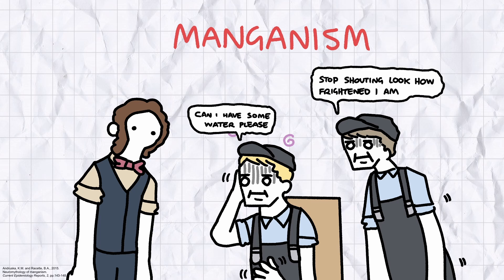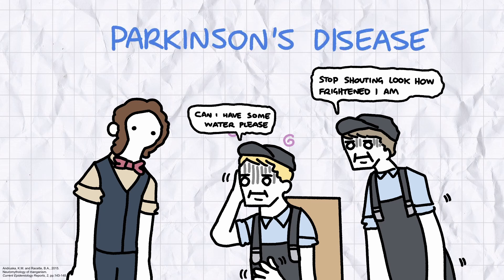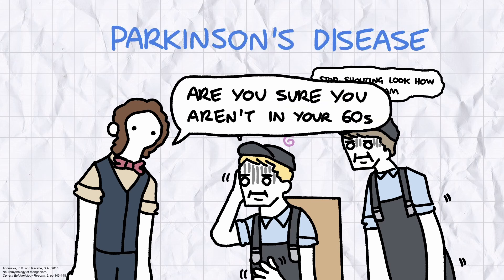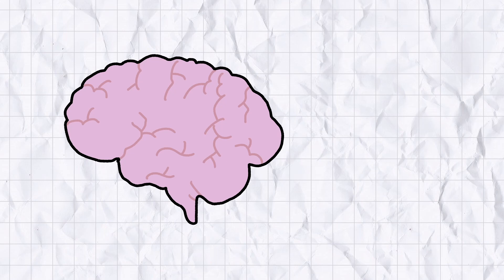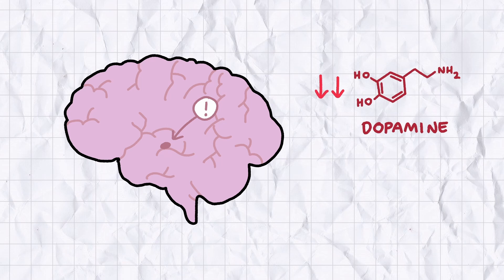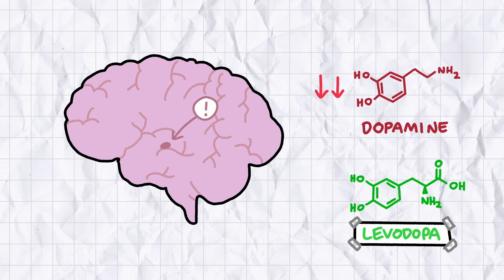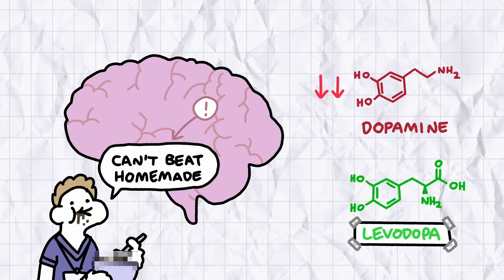Now, medics in the audience may have spotted this condition bears an eerie resemblance to Parkinson's disease, a condition manganism sufferers have historically been misdiagnosed with. Parkinson's disease is most common in the elderly, and is caused by the degeneration of nerve cells in the brain, affecting the production of dopamine. While there isn't a cure for Parkinson's disease, the dopamine deficiency can be treated in the short term by administering a precursor called L-dopa. At least that's what biologists and chemists call it, but apparently in medicine it's called levodopa, because doctors would sooner eat their own turds for dinner than use the same names as the rest of us.